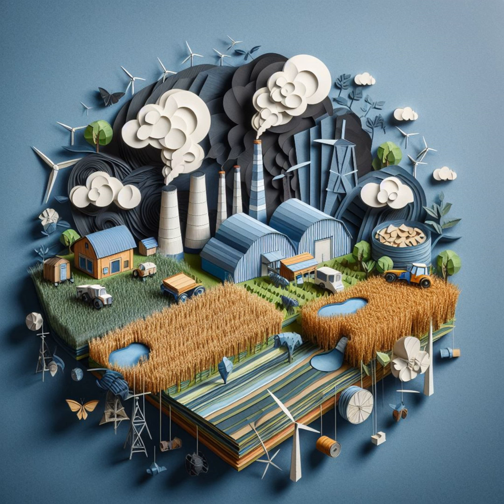A second problem with deforestation is that trees are often burned when cut, releasing large amounts of carbon. It's doubly bad: we reduce our capacity to absorb carbon, and in the process of doing so we emit even more. Scientists have found that burning 1 kilogram of wood releases 1.83 kilograms of CO2. Beef production drives 41% of global deforestation — meaning nearly half of all tree cutting is to create land for cattle.